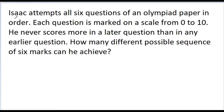In this video, we have a very nice problem from British Math Olympiad. It is given that Isaac attempts six questions on a BMO paper in order. Each question is marked on a scale from 0 to 10. He never scores more in a later question than in any earlier question. How many different possible sequences of six marks can he achieve?